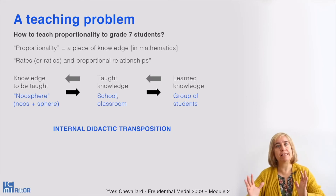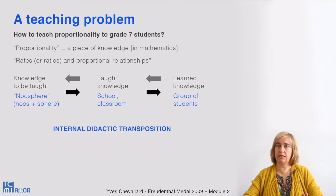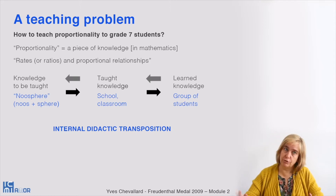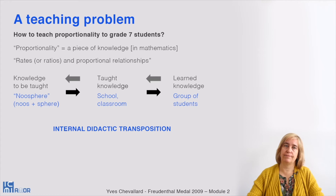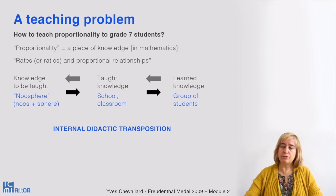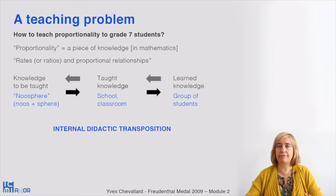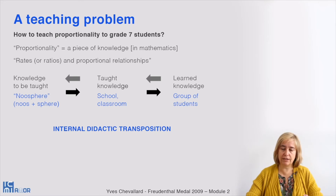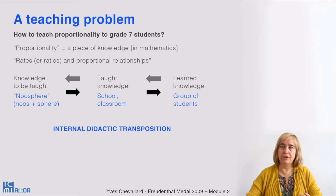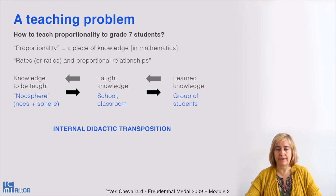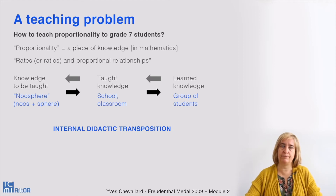The conversion or transformation of the knowledge to be taught into taught knowledge and then into learned knowledge is what is called the internal didactic transposition. It takes place mainly in the educational system, in schools and classrooms, and in the group of students within the classroom. The knowledge to be taught, however, comes from a place surrounding the educational system — a kind of membrane — what we call the nosphere: the sphere of those who think about the educational system.